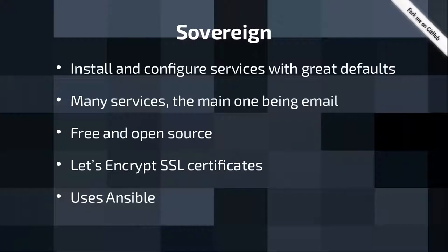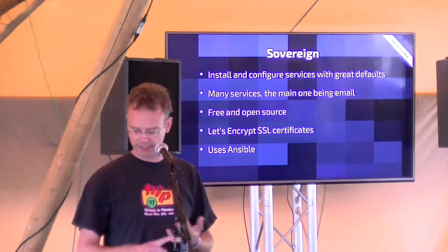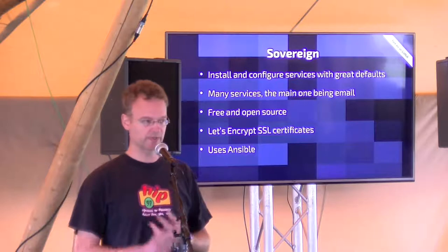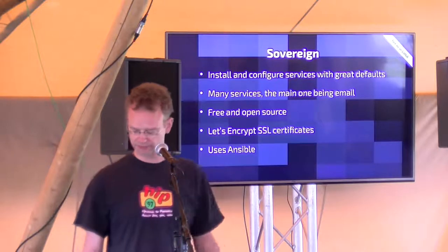The Sovereign project was initiated by a guy called Alex Payne in 2013. He was also fed up with Google and put up some scripts using a tool called Ansible to automate the setup instead of having to follow manual instructions. The project has a lot of services with really nice defaults — strong encryption, automatically generated Let's Encrypt certificates. We have email, calendar, contacts, file sync, IRC bouncers, VPN service, and some more.